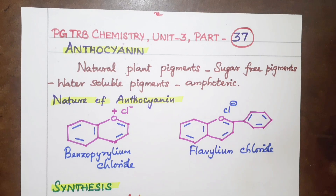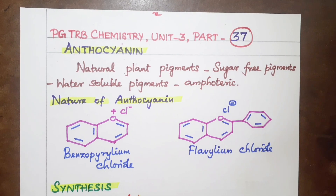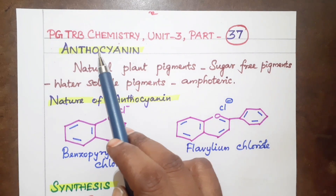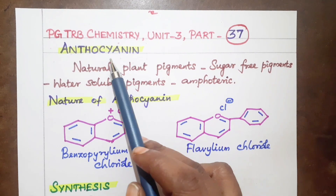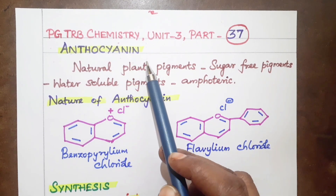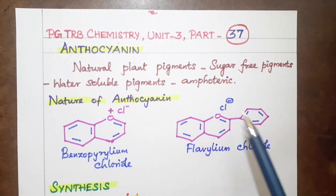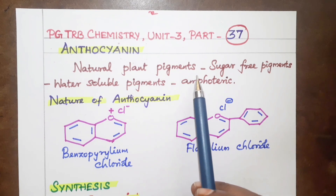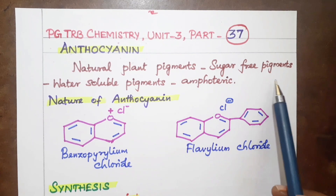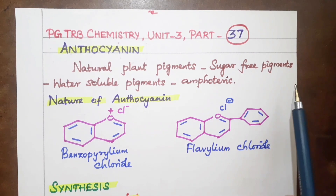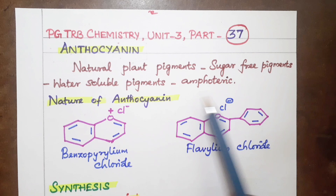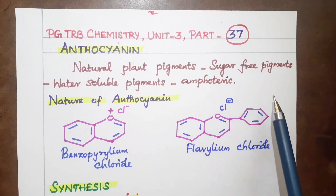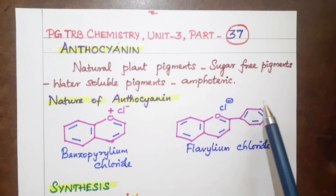Hello, good morning. Welcome to Chemistry School of Learning YouTube channel. I am going to explain anthocyanin. It is a natural plant pigment, sugar-free pigment, water-soluble pigment, of amphoteric nature — meaning it has both acidity and basicity.